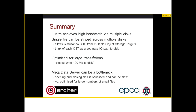To summarize: Lustre achieves high bandwidth through multiple disks. A single file can be striped across multiple disks, allowing simultaneous parallel IO for multiple object storage targets. You can think of each OST as a separate IO path to disk - if you use two OSTs, you can get twice the bandwidth. However, it's really optimized for large transactions - writing 100 megabytes at once. It's not optimized for many small file operations, because opening and closing files go through the metadata server and can be slow. This isn't specific to Lustre - it's a feature of parallel file systems in general.